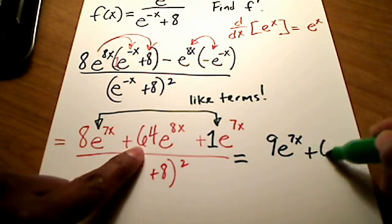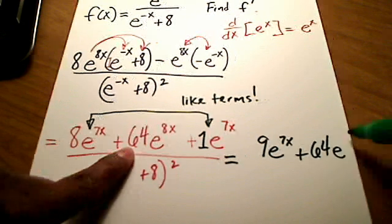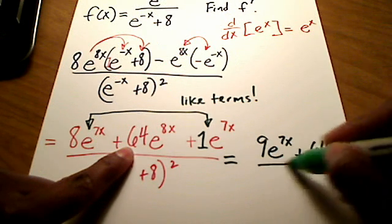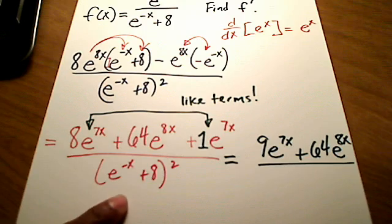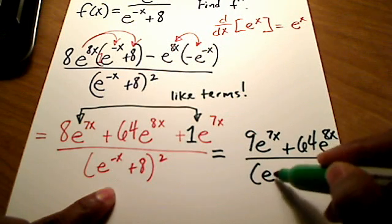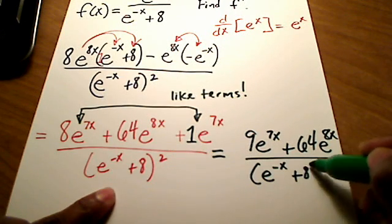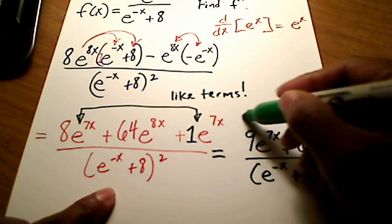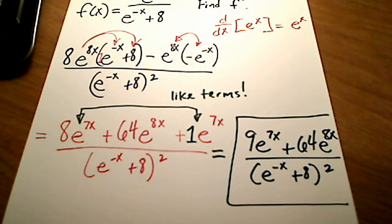Here's my plus 64e to the 8x all over this denominator, e to the negative x plus 8 quantity squared. Final answer. It's as far as I can go. I hope that helps.